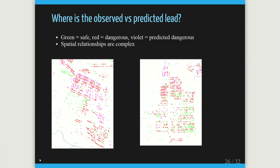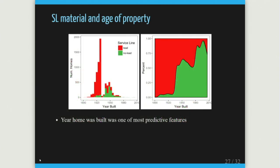Age of property is relevant for predicting a home's service line. Looking at a distribution of when homes were built in Flint, red means lead or galvanized (dangerous material) and green means safe material. There are two spikes of population growth — one right before the Great Depression, one right after World War II. After the Rust Belt decline, there hasn't been much growth since 1960. People started using safer materials around 1940, and after 1960 or 1970 you don't see many homes built with dangerous lines.